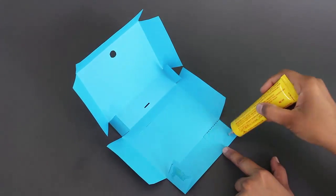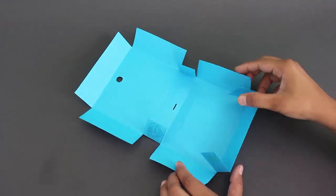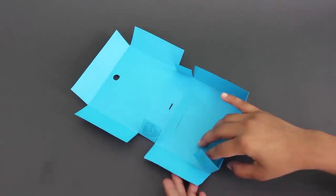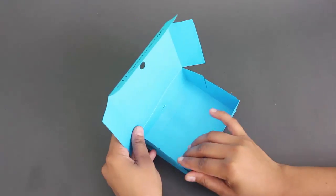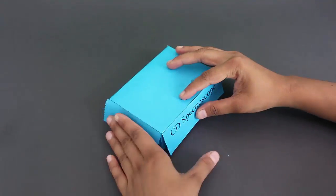Now glue all the flaps on the sides to complete the box. This is the final fold.